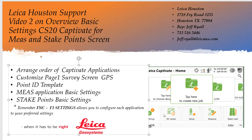We can customize these in the order that we use the most. You can see right now it's set in 3D Viewer, set up a measure and stake row, but we can customize these to put them in the order that we want to use them the most. We'll take a look at the survey screen on page one, and we can customize the settings we see there, take a look at the Point ID templates and change that. We'll take a quick look at the measure application and the stake points, just to see some basic settings.